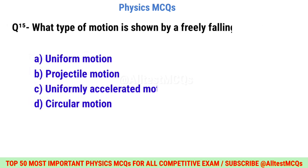Question number fifteen: What type of motion is shown by a freely falling body? Correct option is C: Uniformly accelerated motion.